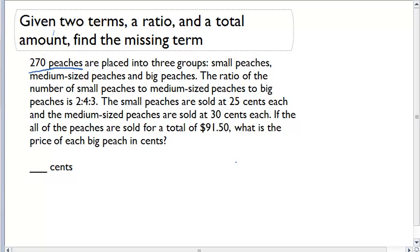The ratio of the number of small peaches to medium peaches to big peaches is 2 to 4 to 3. The small peaches are sold for 25 cents each. The medium-sized for 30 cents each. If the total amount that we sold was $91.50, what is the price of each big peach?